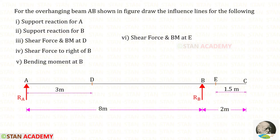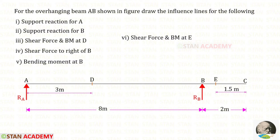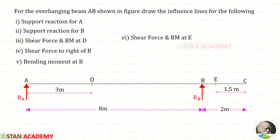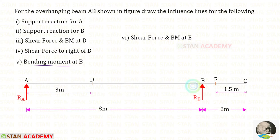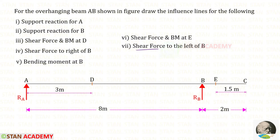Hello everyone. Today we are going to do a problem based on influence line diagrams. Let us read the question one time. For the overhanging beam AB shown in the figure, draw the influence lines for: support reaction at A, support reaction at B, shear force and bending moment at D, shear force to the right of B, bending moment at B, shear force and bending moment at E, and finally the shear force to the left of B.